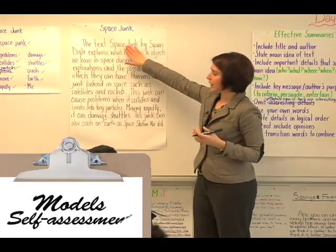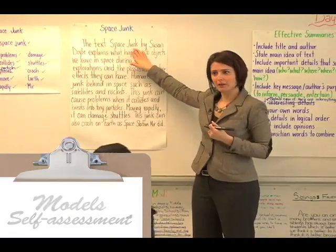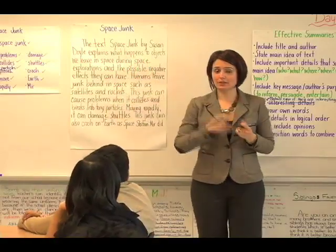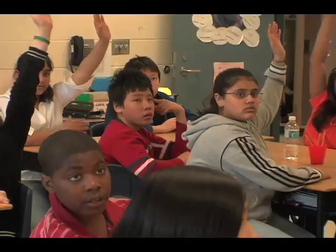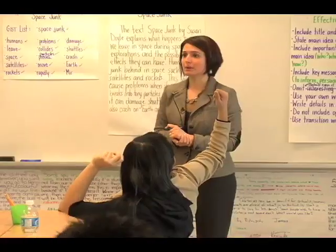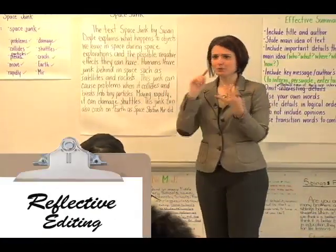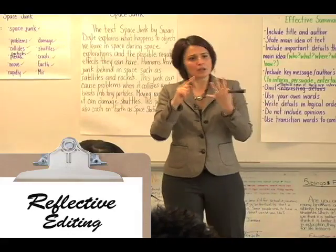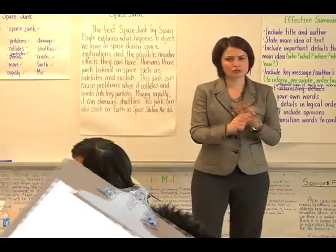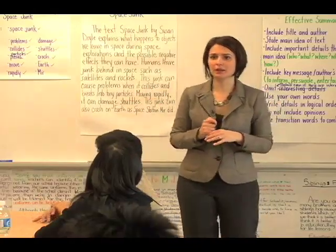Am I done? My summary is done. I have my title and my author, my main idea, my supporting details, my important details. Am I done? No. What am I missing? And we can look at the anchor chart. You have to add the key message or the author's purpose. So, what is the purpose of this text? Remember we said it can have three purposes — it can inform, it can persuade, it can entertain.